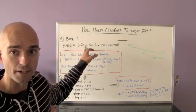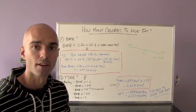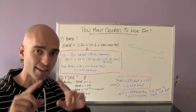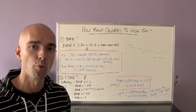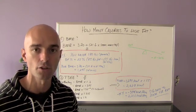If you can see it here, basically the equation is this. If you want to write it down, I really encourage you to do so. So it's 370 plus in brackets, 21.6 times your lean body weight in kilograms.